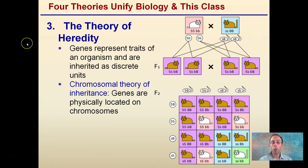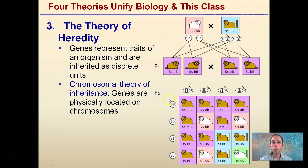Moving on to the theory of heredity: genes represent traits of an organism and are inherited as discrete units. The chromosomal theory of inheritance states that genes are physically located on chromosomes. We've done Punnett squares and looked at traits that are inherited — what's dominant, what's recessive. This is all supported by the theory of heredity, which allows us to determine the predicted percentage of offspring that will be one certain genotype versus another.